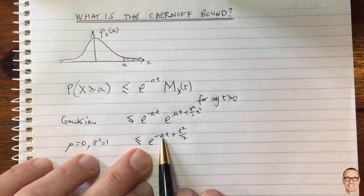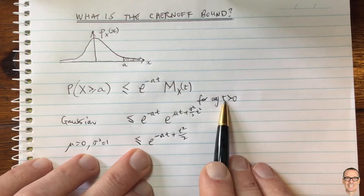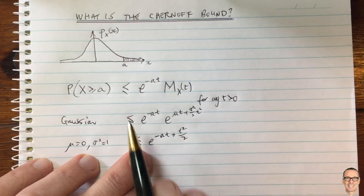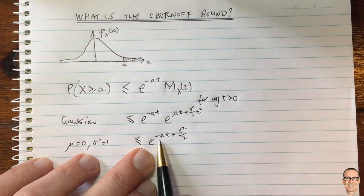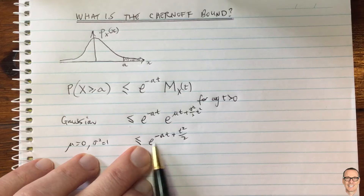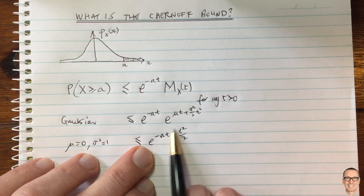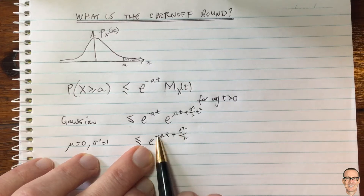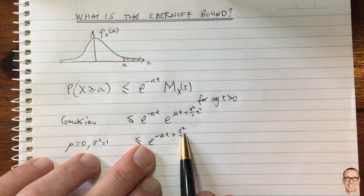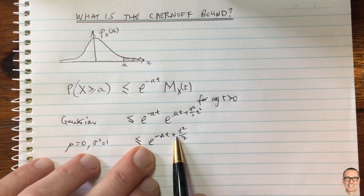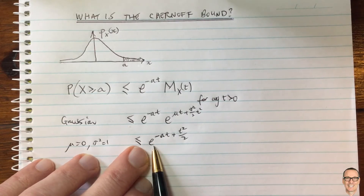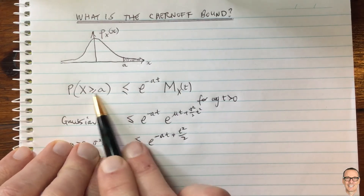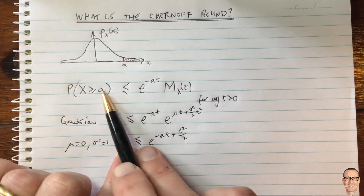This holds for any t greater than zero, so what would be a good choice of t? Since this is an exponential function, if we can make the exponent as negative as possible we get the smallest value on the right-hand side, giving us the tightest bound — the smallest upper bound on this tail probability.